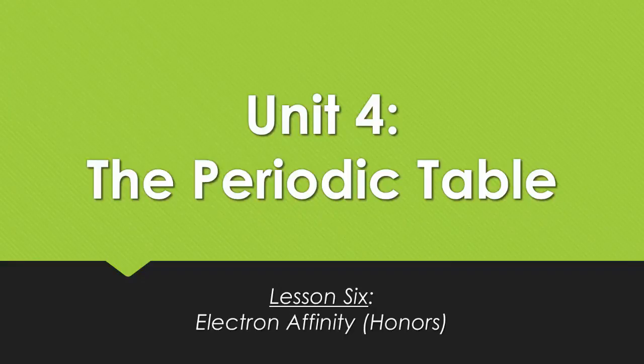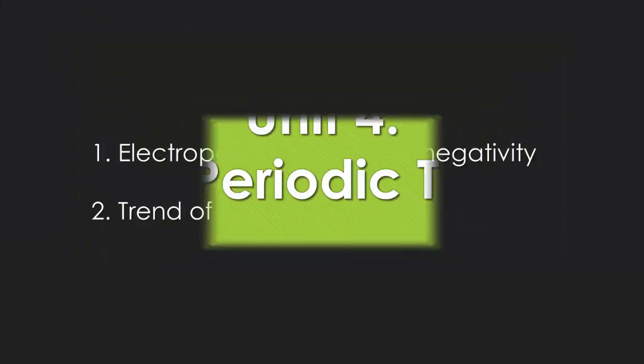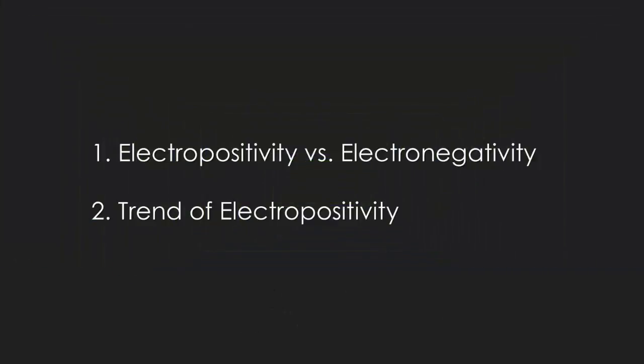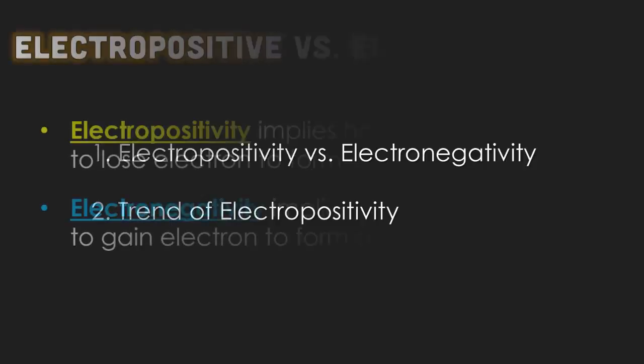Lesson 6 is on electron affinity. We're going to be talking about electropositivity versus electronegativity and the trend of electropositivity.